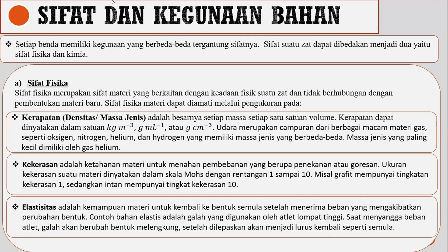Sifat benda bisa kita bedakan menjadi dua jenis: sifat fisika dan sifat kimia. Nanti ini yang akan kalian amati pada benda-benda di sekitar rumah kalian. Sifat fisika adalah sifat benda yang bisa kita ukur — kita amati dari ciri fisiknya. Sifat fisika bisa dibagi menjadi tiga jenis: ada kerapatan (massa jenis), yaitu banyaknya massa yang terkandung pada setiap volume benda. Semakin padat suatu benda, semakin besar kerapatannya; semakin renggang, massa jenisnya semakin kecil.